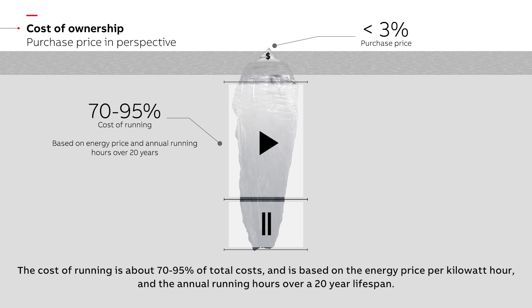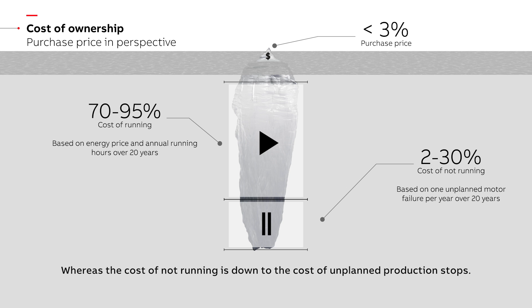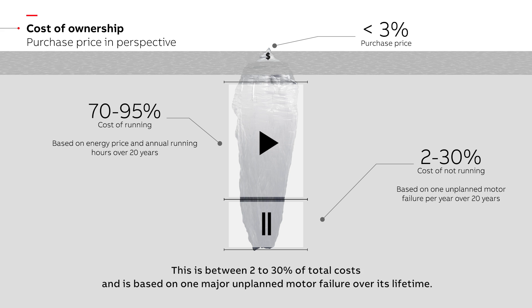The cost of running is about 70 to 95 percent of total costs and is based on the energy price per kilowatt hour and the annual running hours over a 20-year lifespan. Whereas the cost of not running is down to the cost of unplanned production stops — this is between 2 to 30 percent of total costs and is based on one major unplanned motor failure over its lifetime.